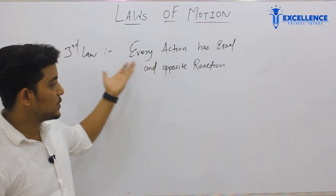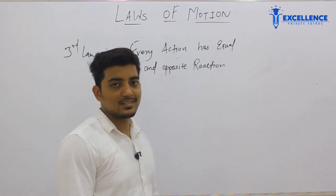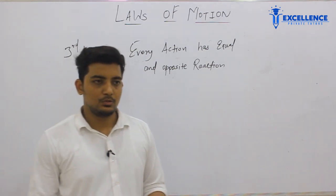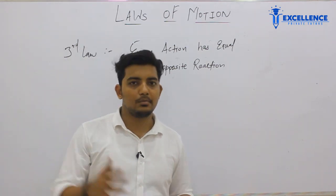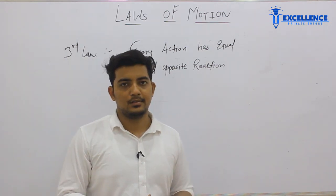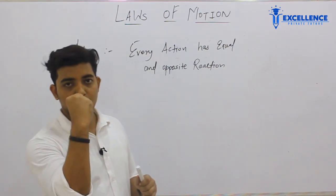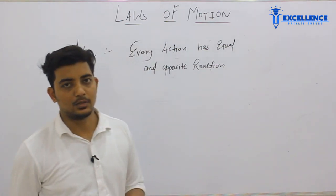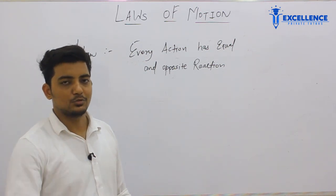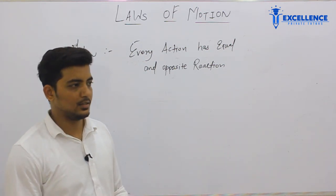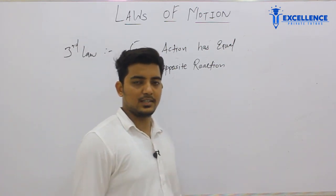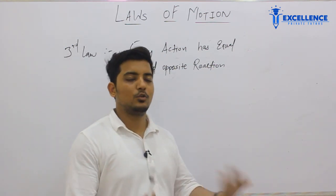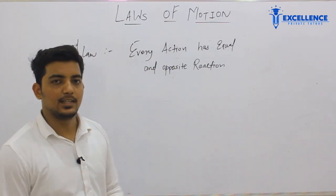Every action has an equal and opposite reaction. What does that mean? If you do any action, it will get an equal and opposite reaction. For example, if I hit my fist forcefully on the wall, the wall also gives the same force back. Do not actually do it, but it gives equal and opposite reaction.